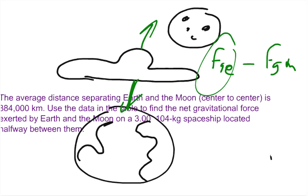And so we've just got to calculate the force of gravity from each one. In the table, the only thing you need is the mass of the Earth and the mass of the Moon. The rest of that's just fluff.